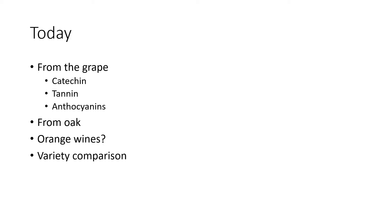Today we're going to talk about phenolics that come from the grape — keeping it simple: catechin, tannin, and anthocyanins — and then we're going to talk about oak-derived phenolics. We'll also have just one slide on orange wines, and then we're going to compare some varieties and see how the catechin, tannin, and anthocyanins in those varieties compare.